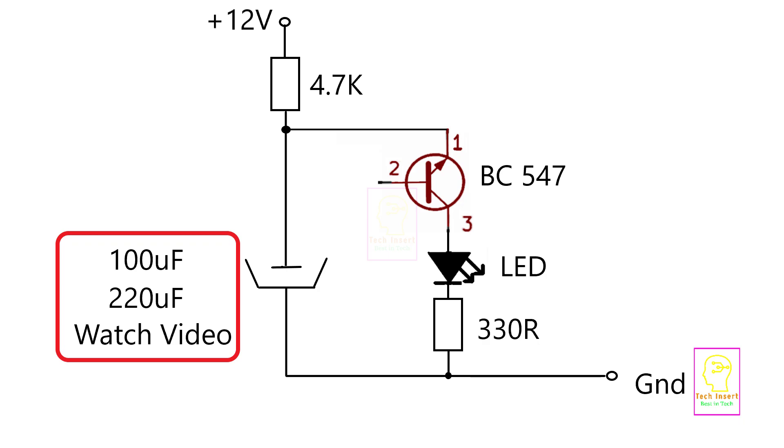When the capacitor voltage reaches certain threshold voltage, this voltage depends upon the type of the transistor we are using, it will leak the current through the base to make the base emitter junction forward biased.